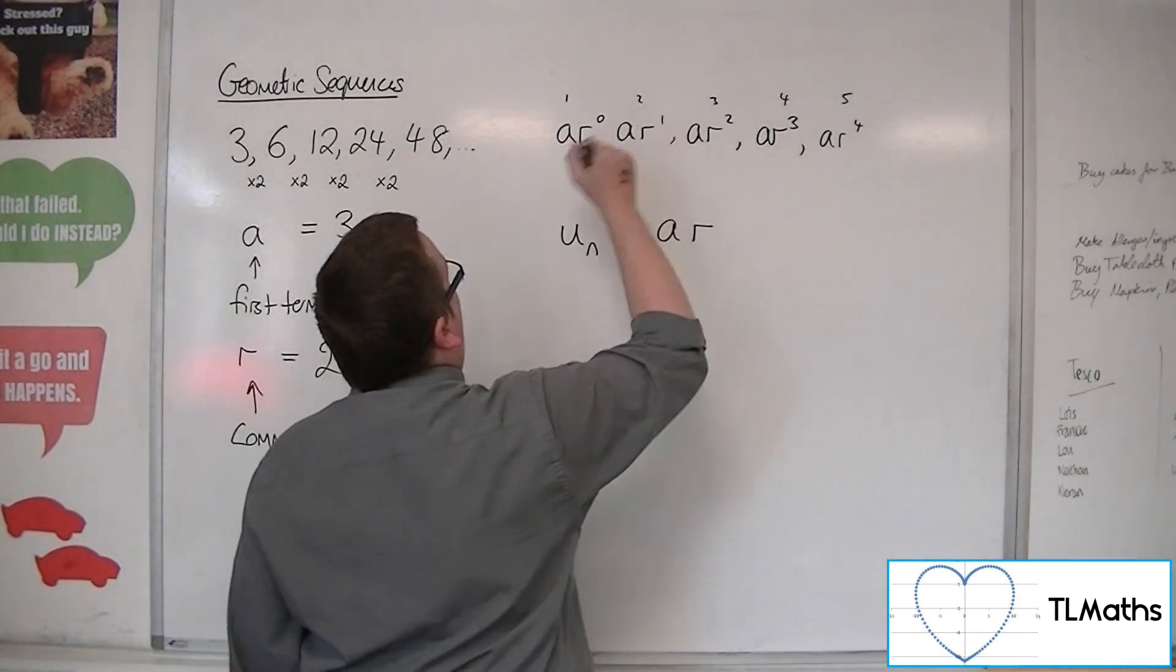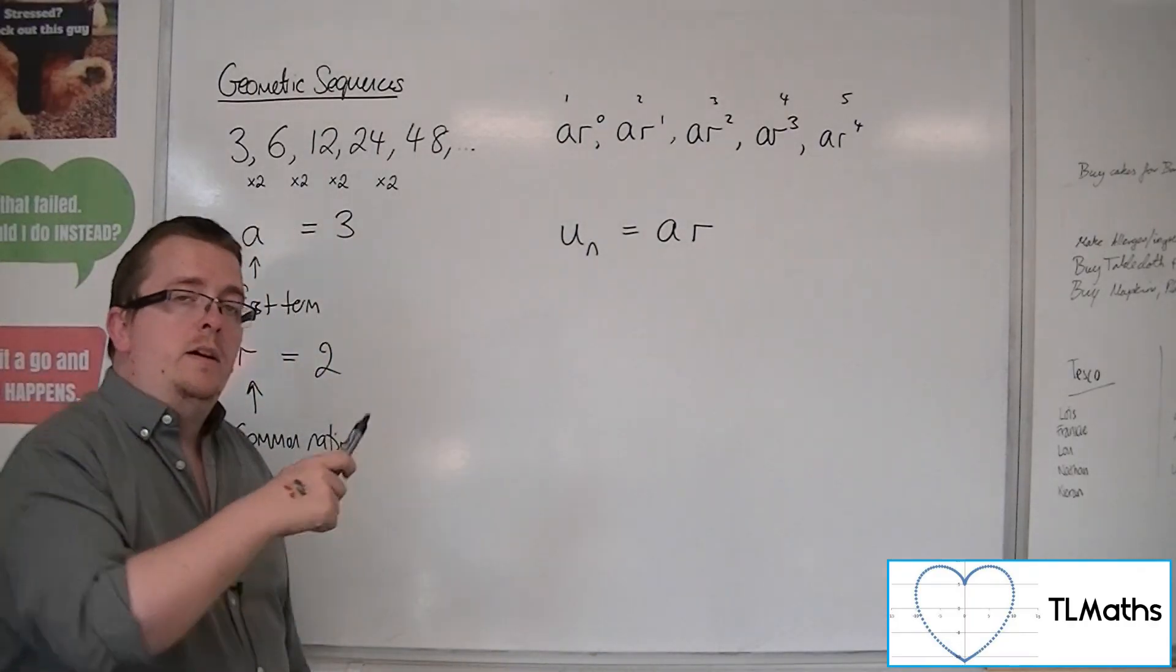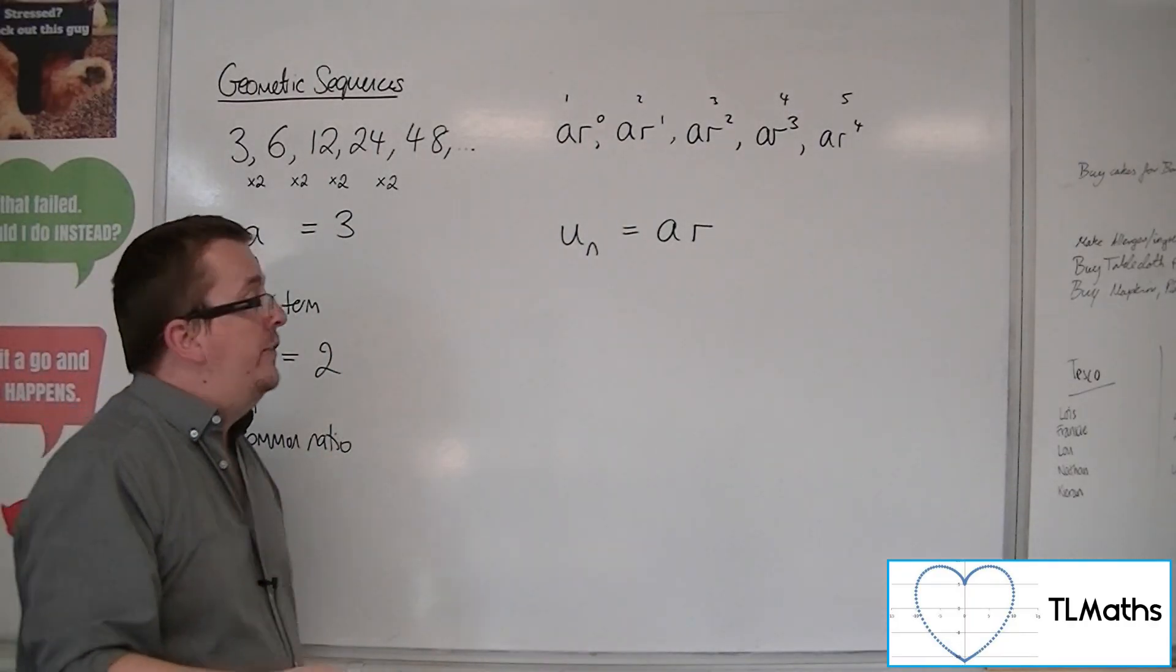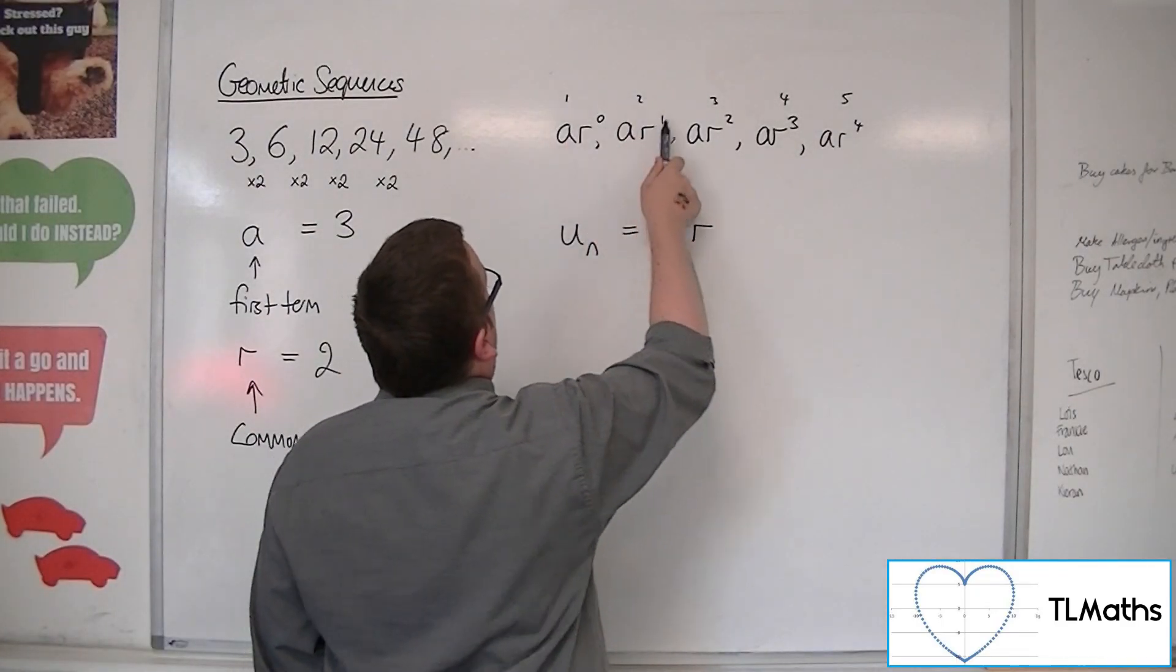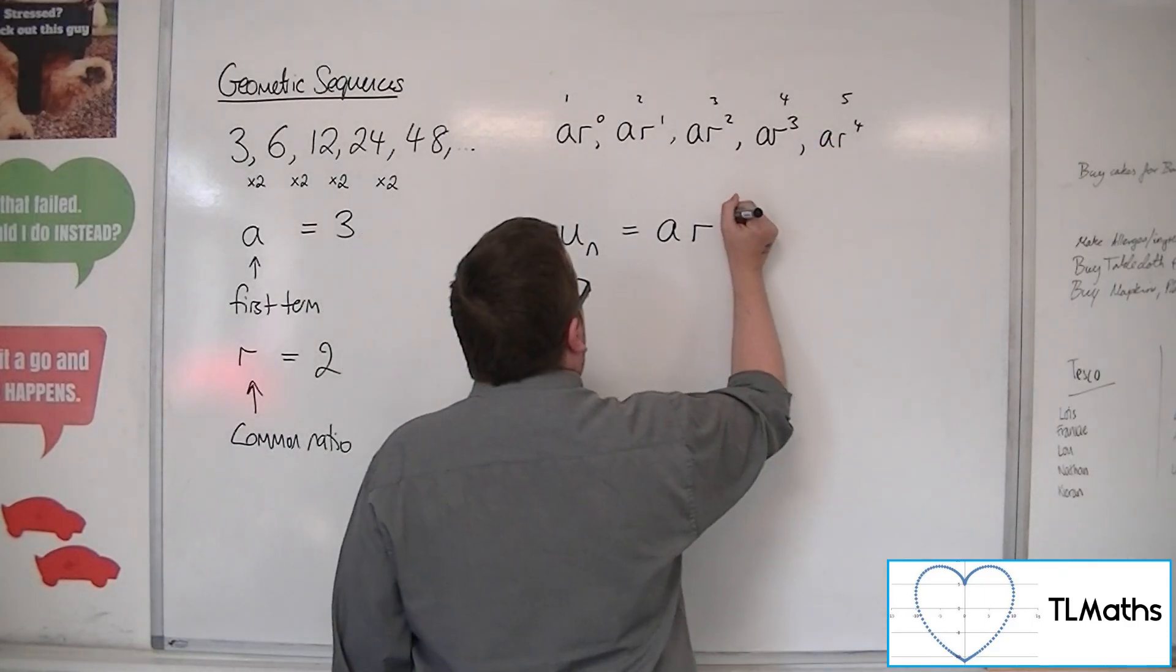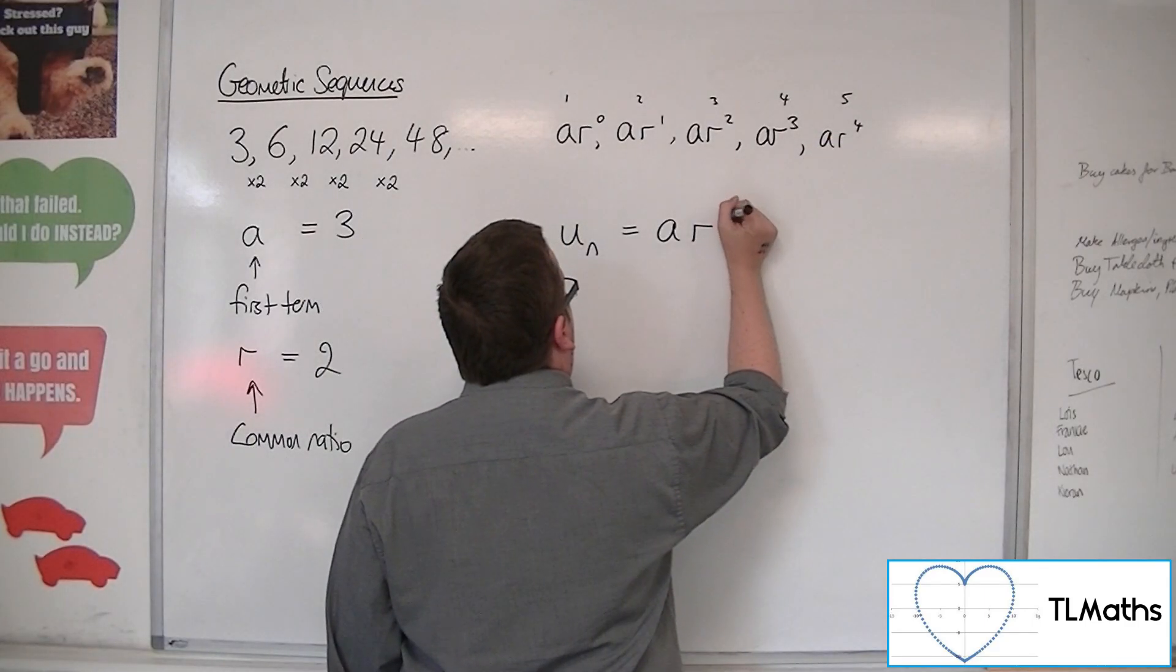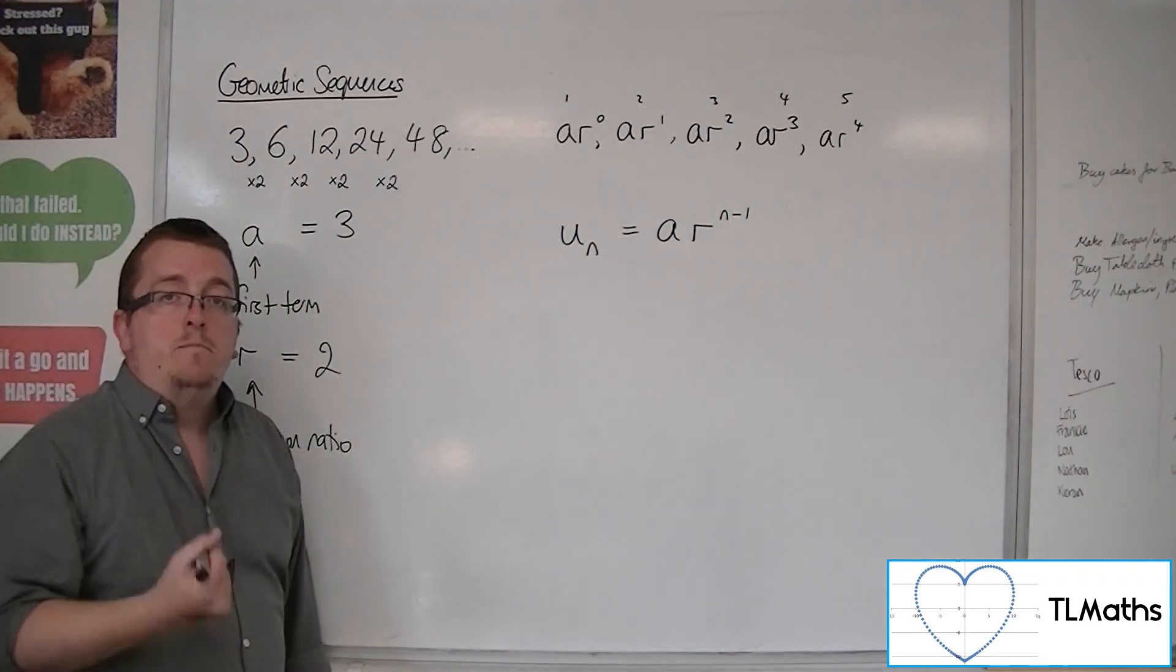So then if we put this as ar to the 1, you can see that the power of r is always 1 less than the position. OK, so 1, 0, 2, 1, 3, 2, 4, 3, 5, 4. So the power for r is always 1 less than the position, and so it's n minus 1.